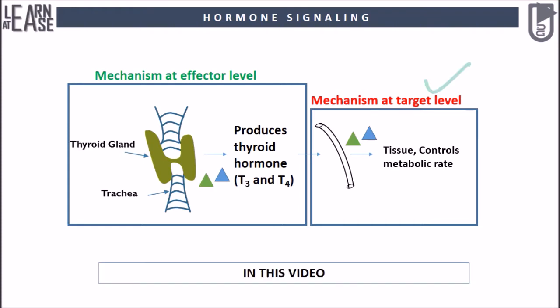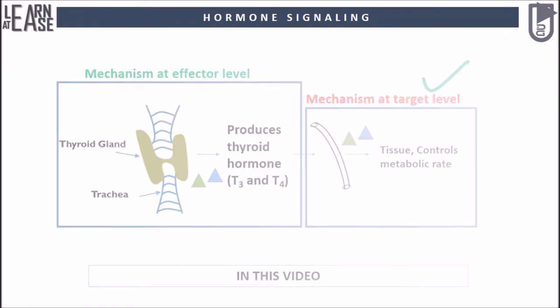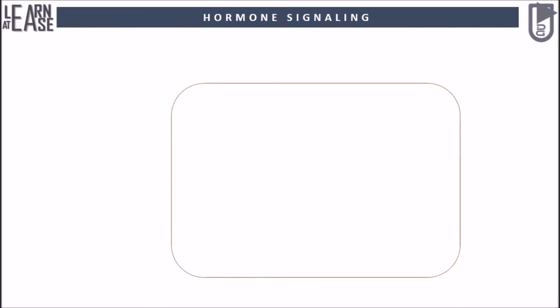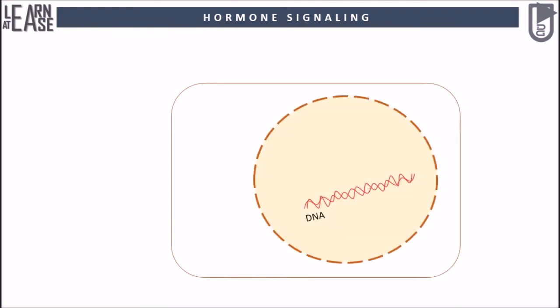In this video I will be focusing on the action of thyroid hormones on the target tissue. In the animation shown, a eukaryotic cell possessing a nucleus containing DNA is shown; this represented cell is a target cell on which the thyroid hormones will be acting.